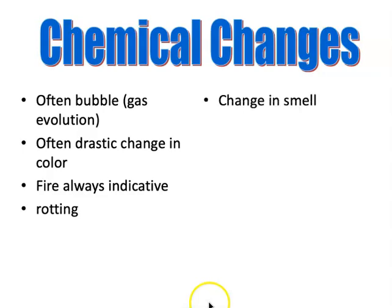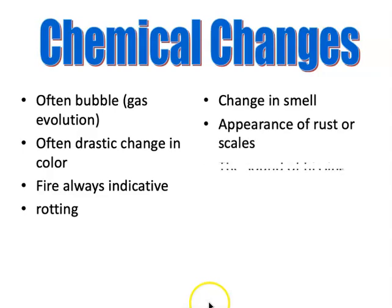Other indicators of chemical change include rotting, a change in smell, rusting or scaling, and the sound of hissing. Basically, if you're standing in lab and you see or hear anything that makes you go 'ah,' that's probably a chemical change.